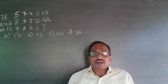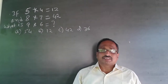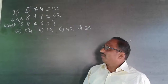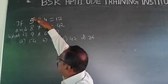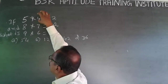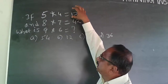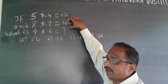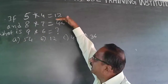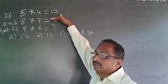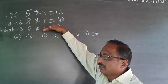Whenever you get logical reasoning questions like this, you will have to find out what is happening in the first one — it is not a pure multiplication. You will have to find out what exactly is happening, then see whether the same thing is happening in the second one, and then implement it.